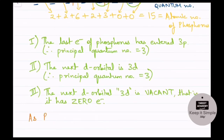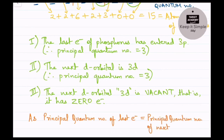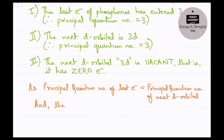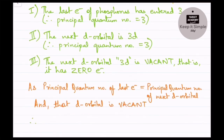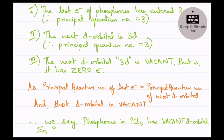Since the principal quantum number of the last electron entered (3p) is equal to the principal quantum number of the next d orbital (3d), and that next d orbital is empty, we can say phosphorus in PCl5 has vacant d orbitals. Therefore PCl5 is an electrophile because phosphorus has a vacant d orbital.